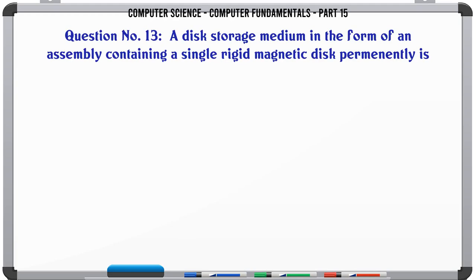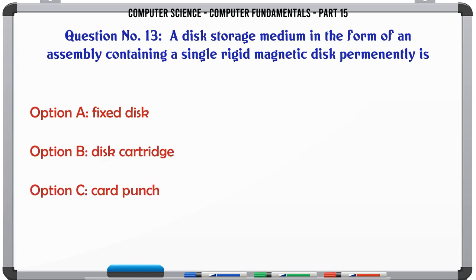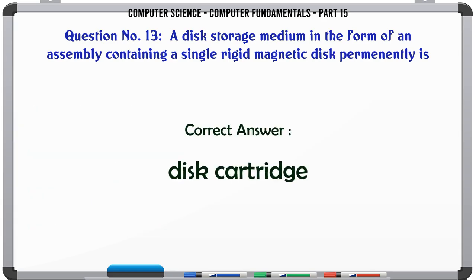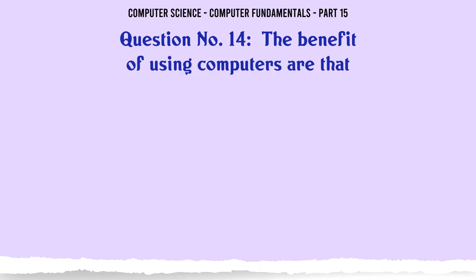A disk storage medium in the form of an assembly containing a single rigid magnetic disk permanently is: A. Fixed disk B. Disk cartridge C. Card punch D. Card reader. The correct answer is Disc cartridge.